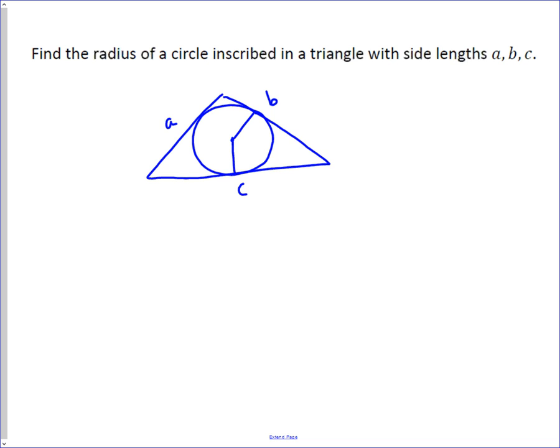So if you draw in these radii, you find out that they're all the same length, and they all meet the side length at right angles. Which then means you can partition or separate this graph into three triangles that I'll form with my red lines.